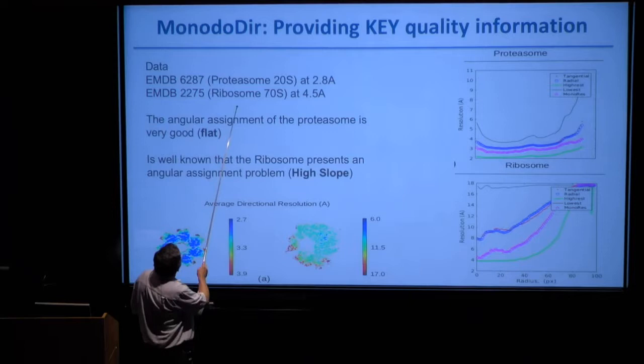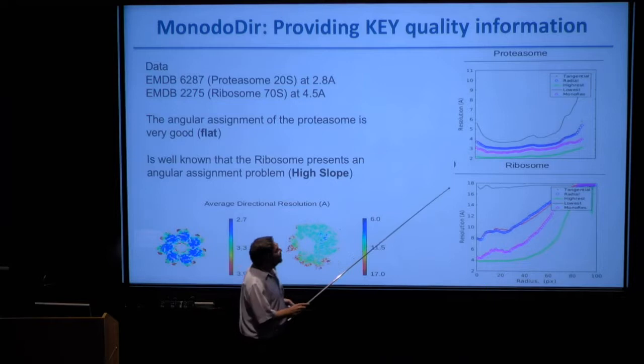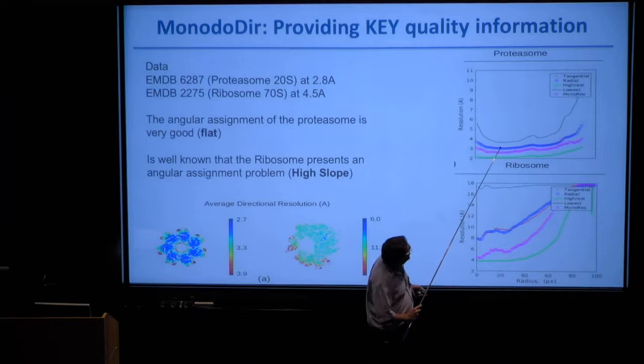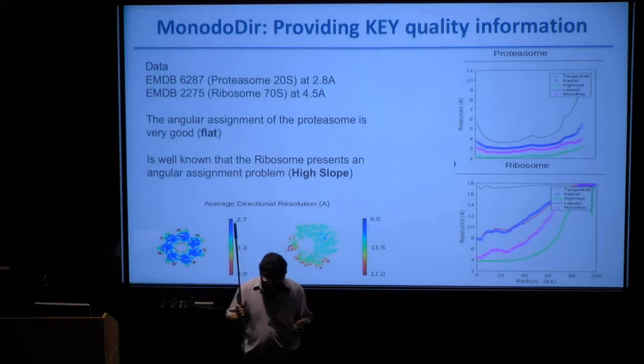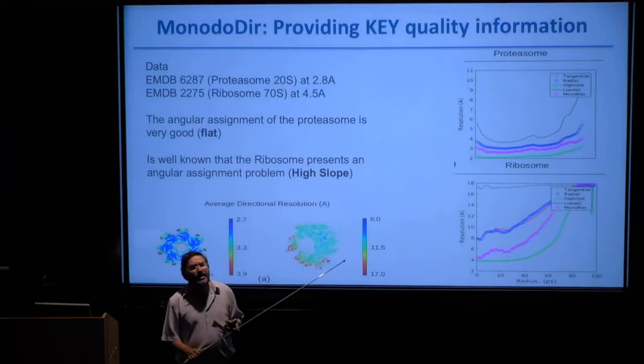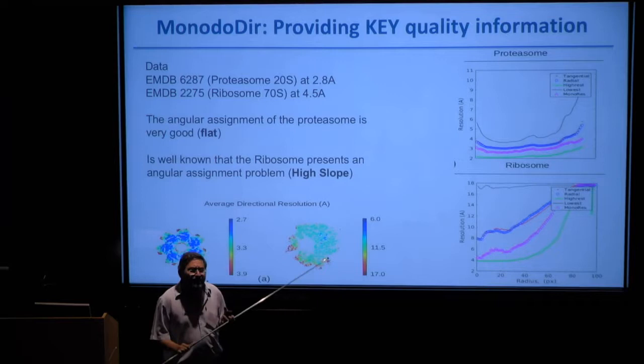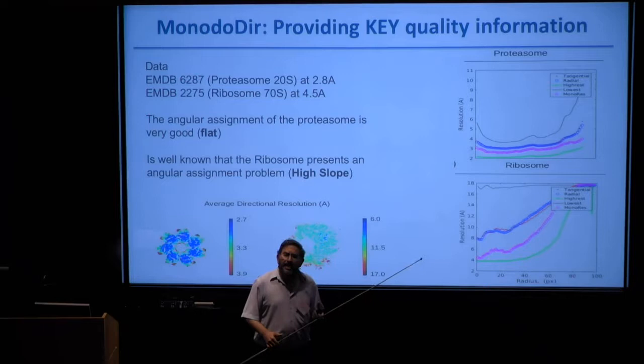Applying this to real cases: for the proteasome, we see a small slope in the tangential resolution curve, but it's quite flat — indicating a small average angular error. Importantly, I'm taking the map alone. I do not take the images; I do not have the angular assignment of those images. Only from the map itself, I can tell you something about the average angular error — which is important information related to the quality of your reconstruction.